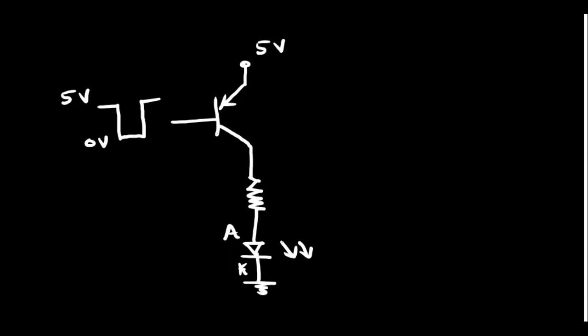Now what is happening? When the switch is closed, the current flows like this — current is flowing out of the device. So this configuration is a current sourcing configuration.